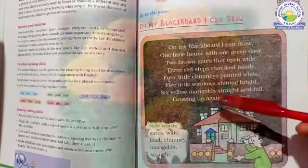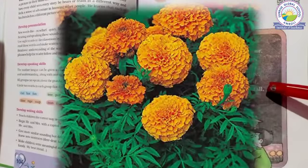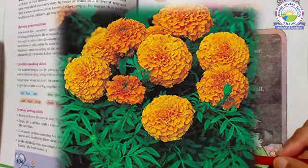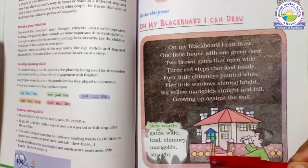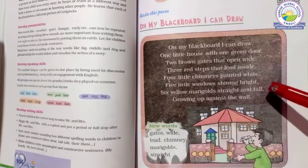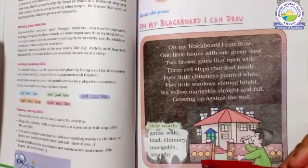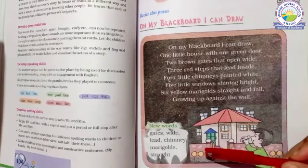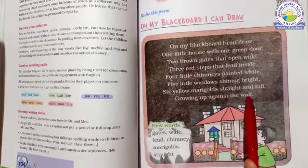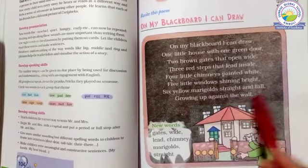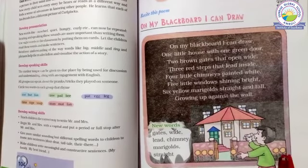Six yellow marigolds, straight and tall. The marigold flower is made — how many? Six. This one is straight and tall. Growing up against the wall. The six marigold flowers are grown up against the wall.